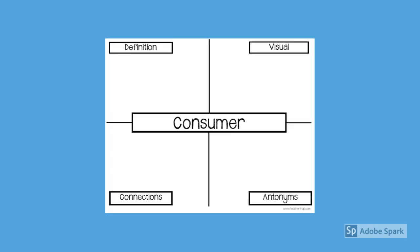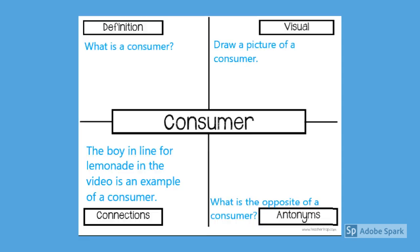Also, while watching the video, have your consumer worksheet out and ready, and be listening for what a consumer is. There are hints on the next page as to what a consumer is. A connection from the video is the boy in line for lemonade is an example of a consumer. An antonym is what is the opposite of a consumer. A visual is draw a picture of a consumer, and the definition is what is a consumer.